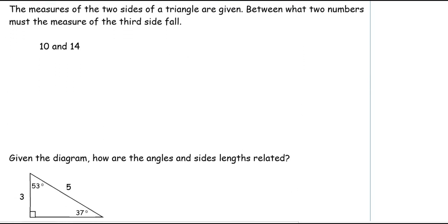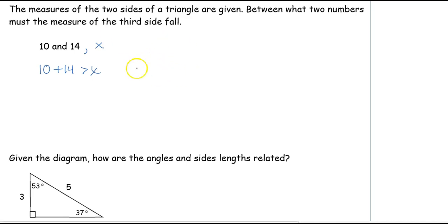Sometimes I'm going to give you just two sides of the triangle and we have to figure out the third side. There's not going to be just one right answer — we're going to have a range of answers. I know that I have sides 10 and 14, and some mysterious side x. We want to find out what range of values of x will form an actual triangle. Using the inequality theorem, I can write three inequalities: 10 + 14 > x, 10 + x > 14, and 14 + x > 10.